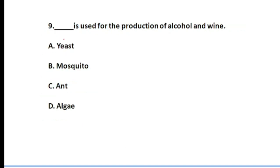Question number nine: yeast is used for the production of alcohol and wine. It is not an ant or algae. Yeast is what is used for alcohol and wine production. Question number nine, option number A, will be the correct answer.